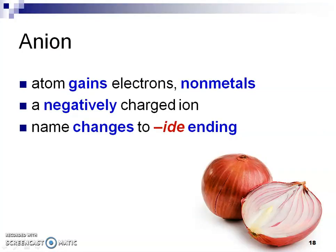An anion is the opposite — it's going to gain electrons. Non-metals tend to gain electrons and become negatively charged, called an anion. The reason I have an onion here is that onion and anion sound similar. The tricky part is that when atoms become anions, their name ending actually changes to an -ide ending.